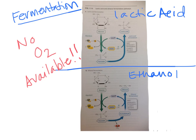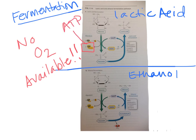In lactic acid fermentation, when no oxygen is available, enzymes break down NADH, steal those hydrogens, and dump them onto pyruvate to form lactic acid. That regenerates the NAD+ we need to keep glycolysis going — and we care about keeping glycolysis going because we need those two ATPs for other processes.